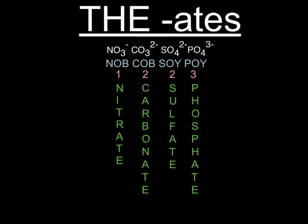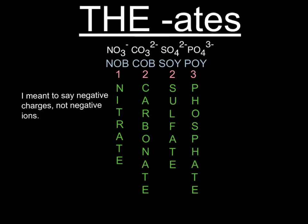Sulfate and phosphate both have four oxygens and they're 'Soy' and 'Poi' because an uppercase Y looks like a four. So if you write out 'Knob Cob Soy Poi' you have the number of oxygens and the first element for each ion. You can also remember the charges with 'Knob Cob Soy Poi' and 1, 2, 2, 3 — the negative charges for each of these four polyatomic ions in order. The names are just nitrogen, carbon, sulfur, and phosphorus with the suffix -ate.